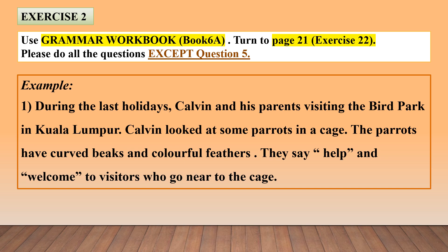After checking the meaning of words, then you're going to read the passage again. And this time, I want you to underline the verbs in the paragraph. Let's take a look at the first sentence: 'During the last school holidays, Kelvin and his parents' — subject: Kelvin and his parents — so the verb is 'visiting'.